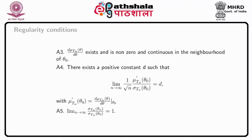Assumption A4: there exists a positive constant D such that 1 divided by root n times mu prime(T_n, theta naught) divided by sigma(T_n, theta naught) equals D, where mu prime(T_n, theta naught) is the derivative of mu(T_n, theta) with respect to theta at theta equals theta naught. Assumption A5: the limit as n tends to infinity of sigma(T_n) divided by sigma(T_n, theta naught) equals 1.